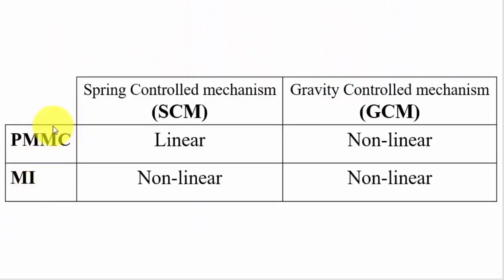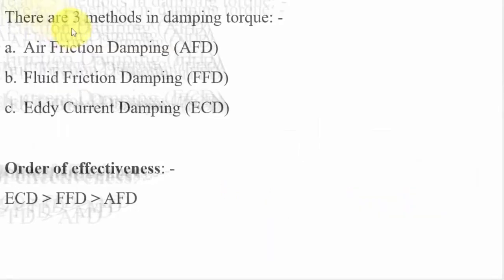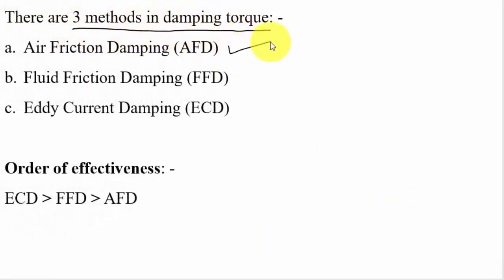In PMMC and moving coil instruments there are two control mechanisms: spring control mechanism and gravity control mechanism. With PMMC using spring control, the scale is linear. With gravity control mechanism, the scale is non-linear. For moving iron instruments, both spring control and gravity control give a non-linear scale. There are three methods of damping: air friction damping, fluid friction damping, and eddy current damping. Damping is introduced to minimize oscillations.